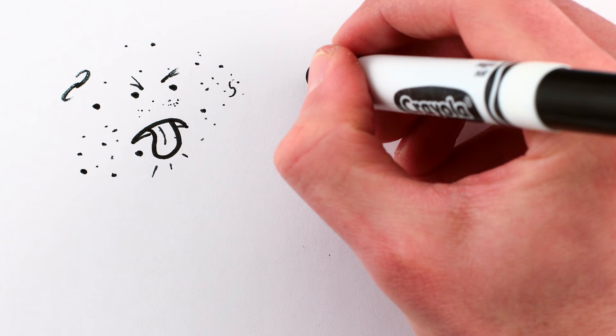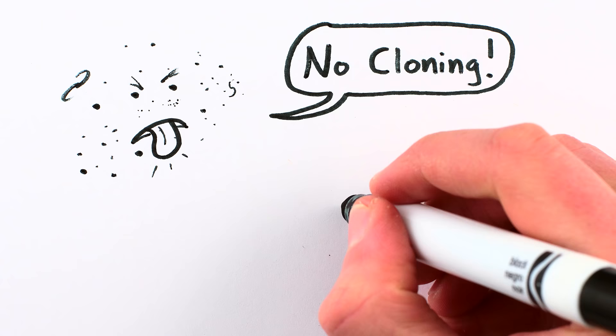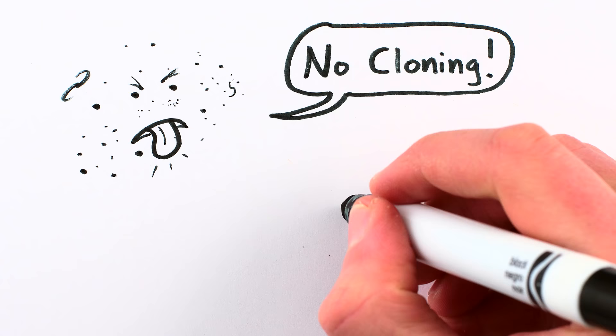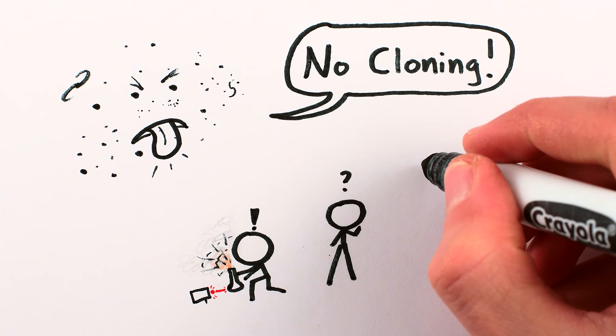Unfortunately, the universe is a party pooper, and perfect cloning is impossible. I don't simply mean that we don't know how, or that we haven't succeeded yet because it's really hard to do in practice, no, I mean it has been mathematically proven that perfect cloning can't be achieved even in principle.